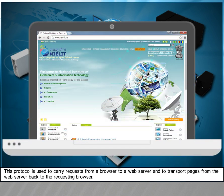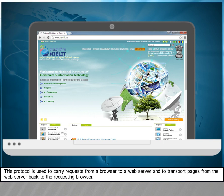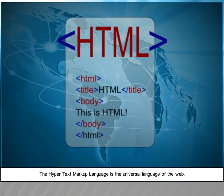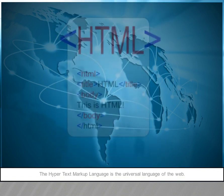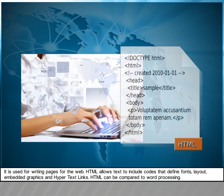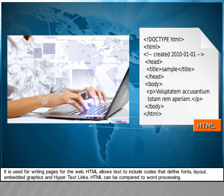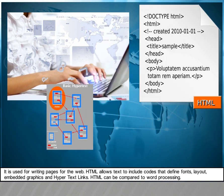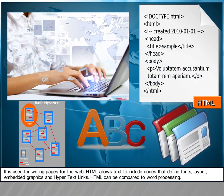HTTP is used to carry requests from a browser to a web server and to transport pages from the web server back to the requesting browser. The Hypertext Markup Language is the universal language of the web. It is used for writing pages for the web. HTML allows text to include codes that define fonts, layout, embedded graphics and hypertext links. HTML can be compared to word processing.